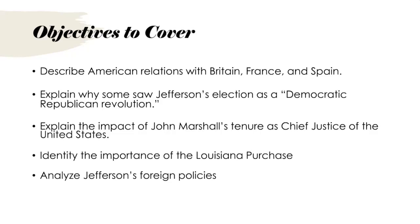Some saw Jefferson's election as a Democratic-Republican revolution — but what did this really mean? Jefferson's election in 1800 marked a shift in American politics. He was a Democratic-Republican; at the time there was a party named the Democratic-Republican Party, distinct from today's Democrats and Republicans. He advocated for limited government and more powerful states' rights. His victory over John Adams, a Federalist and supporter of a strong central government, signaled a peaceful transition of power between political parties — a significant departure from European norms.